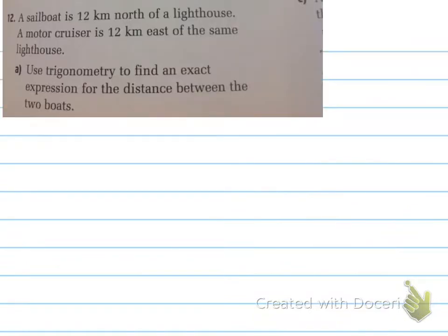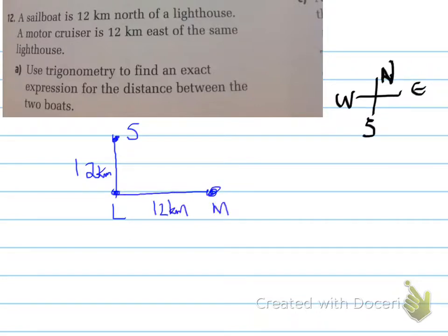All right, we're looking at number 12 now. A sailboat is 12 kilometers north of a lighthouse. A motor cruiser is 12 kilometers east of the same lighthouse. Use trigonometry to find an exact expression for the distance between the two boats.